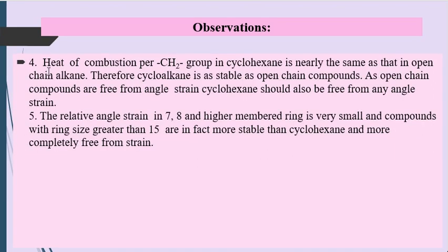The heat of combustion per CH₂ for cyclohexane is exactly the same as for open-chain compounds, so cyclohexane is as stable as open-chain alkanes and is free from any angle strain. For seven-membered and higher rings, the relative angle strain is very small, and compounds with ring size greater than 15 are in fact more stable than cyclohexane and completely free from strain.